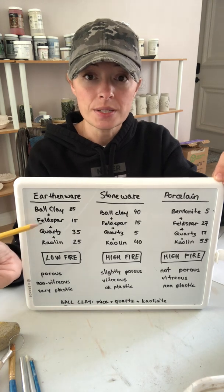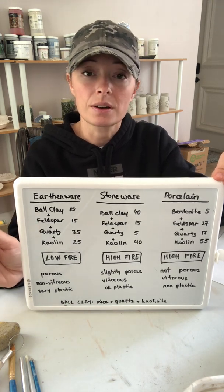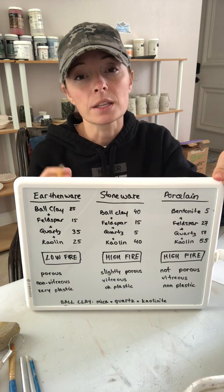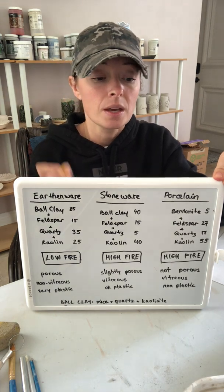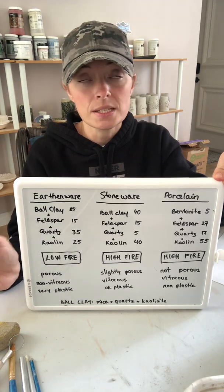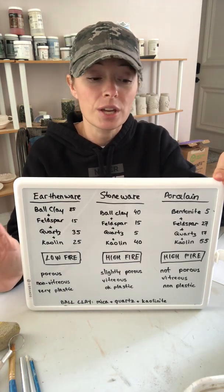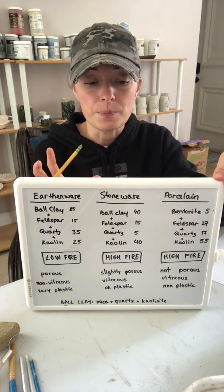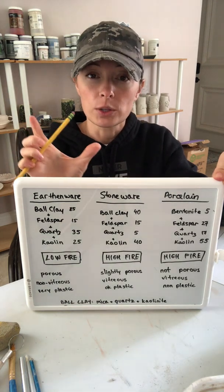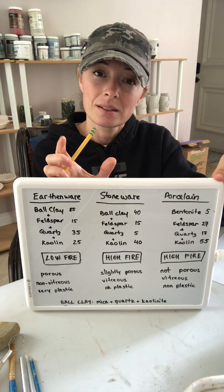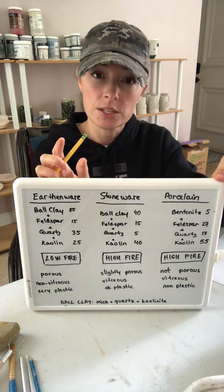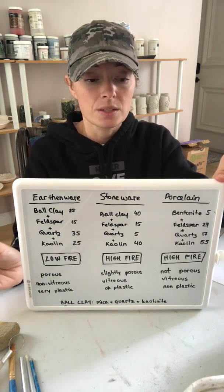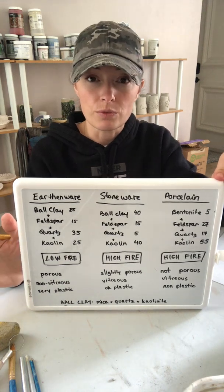The feldspars are really important — they're important for vitrification. These are the guys that are going to get really fluid and fuse everything together in your clay. Your quartz — you'd think silica contributes to vitrification, and it does contribute, but it actually has more to do with glaze fit. It increases the thermal expansion of your clay so that when it cools it can shrink with the glaze together, and that way it doesn't craze. So quartz has more to do with thermal expansion of your clay.